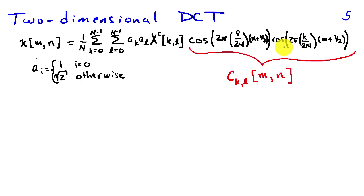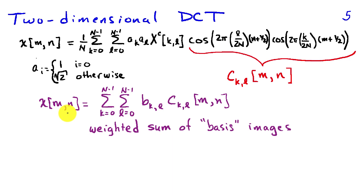c sub k, l of m, n. So m and n are the indices of the image, and k and l are the frequency indices of the cosines. With this grouping, we can see that the discrete cosine transform is representing the image as this weighted sum of basis images.